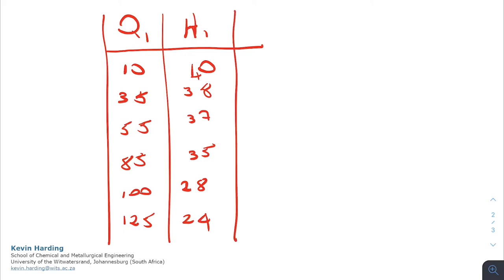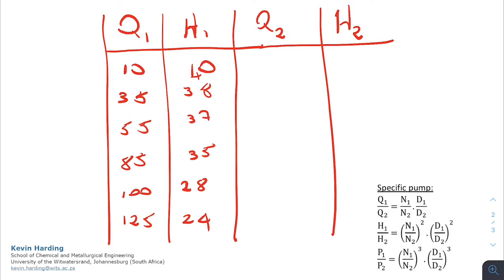What we now want to do is convert those Q1 and H1 values into Q2 and H2 values, so that we can get a new pump curve for this new pump. In order to do that, we're going to be using the affinity laws that we had from earlier, and in particular, the set of equations that we had for a specific pump. In this instance, we are interested in Q1 and Q2, so we don't need to worry about the power curves.